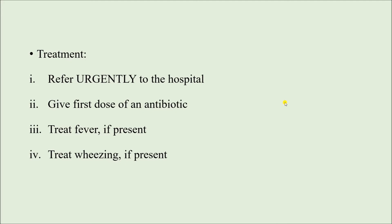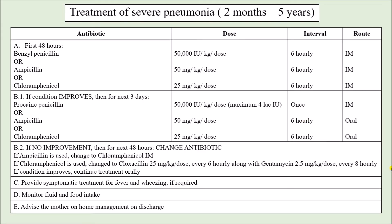For treatment of severe pneumonia, the child should be referred to the hospital urgently. The first dose of antibiotic is to be given, and fever and wheezing, if present, should be treated. Now let us specifically discuss the antibiotic treatment for severe pneumonia.